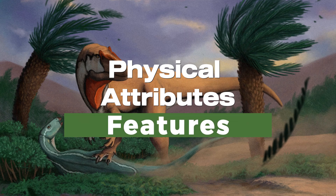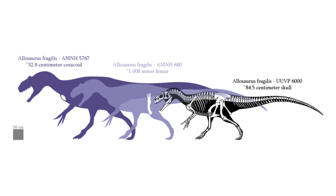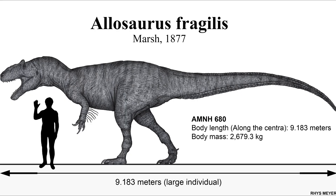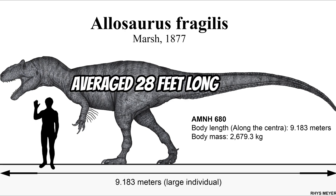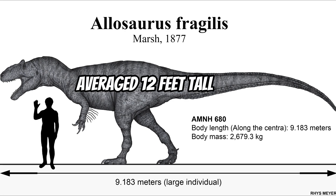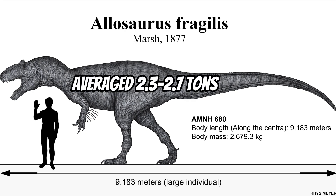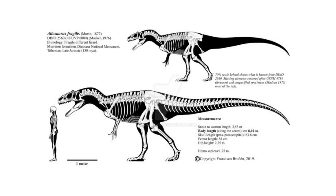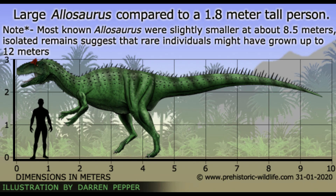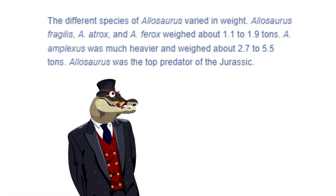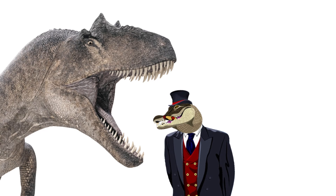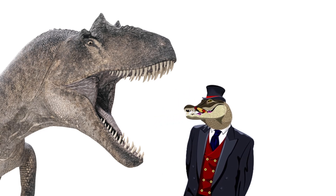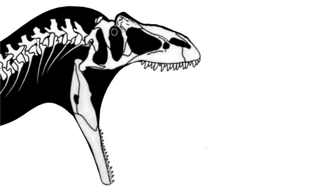Allosaurus varied in size depending on the species, but in general they were large dinosaurs. Its average length measured 28 feet and its height 12 feet, with its weight estimated to be between 2.3 to 2.7 tons. The largest and most well-known species, Allosaurus fragilis, could have reached lengths up to 36 feet. The West Virginia Geological and Economic Survey Museum suggests that large members could reach 2.7 to 5.5 tons. After scientists completed biomechanical analysis, it became evident that the skull was very strong, yet had a relatively small bite force.